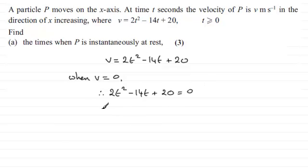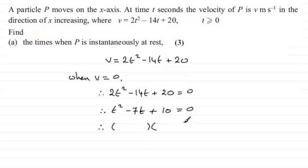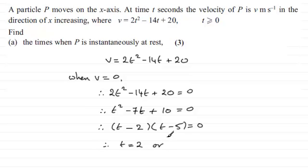We can divide through by two, giving t squared minus 7t plus 10 equals zero. We can factorize this into two brackets: t minus two and t minus five equals zero. That means each factor should equal zero: t minus two equals zero leads to t equals two, or t minus five equals zero leads to t equals five.